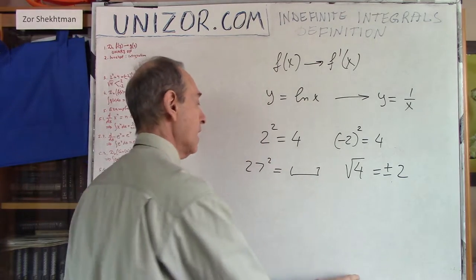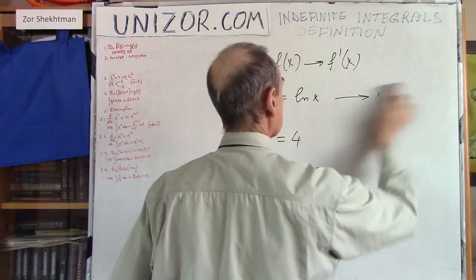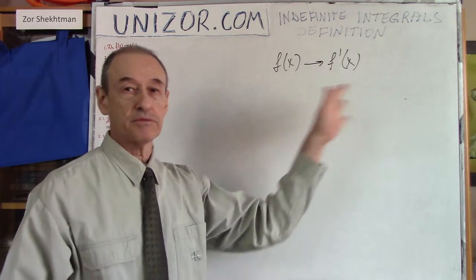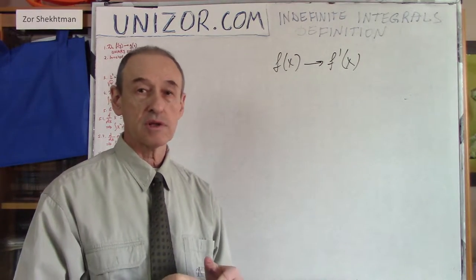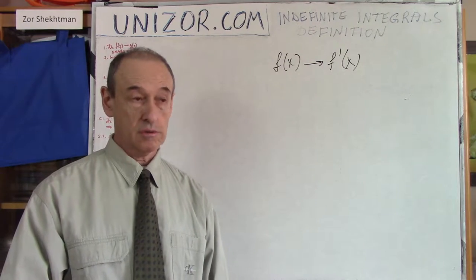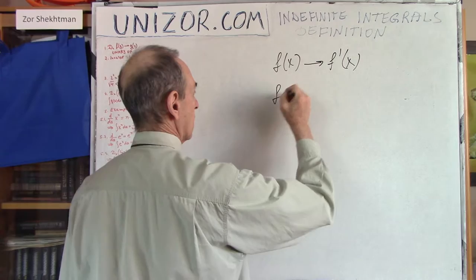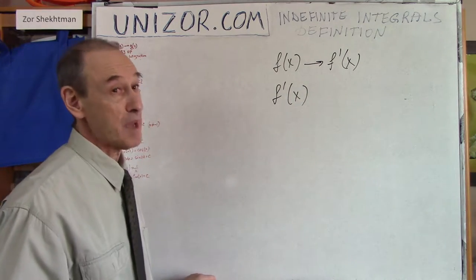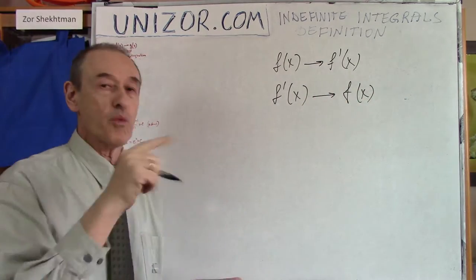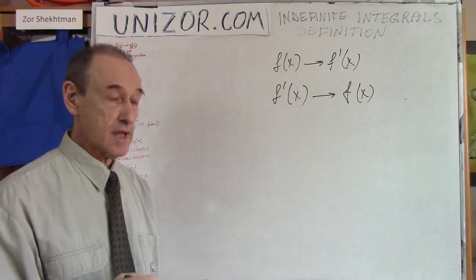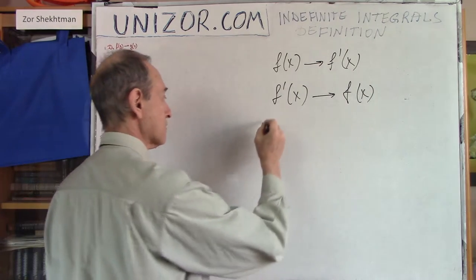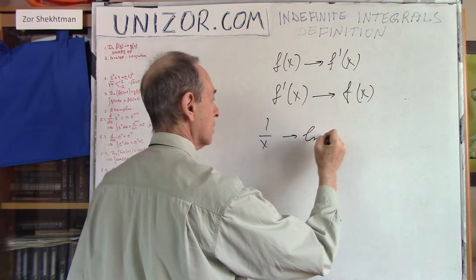Now let's go back to integration. Differentiation, as we found out, is a unary operation among sufficiently smooth functions. Can we talk about a reverse operation? Obviously we can — because if you take some function which happens to be a derivative of something, and we can find the original function, then that would be an operation. This operation is called integration. For instance, from 1 over x, we can get back to logarithm x.